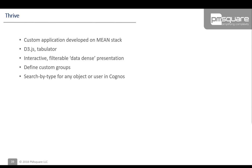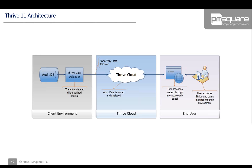Thrive allows you to define custom groups — you can group a set of users together, say 'this is our marketing department,' and see what their usage patterns look like. You can also search for objects in Cognos like a user, report, or package to find what you're looking for easily. On the back end, the Cognos audit database feeds a Thrive data uploader that extracts data into the Thrive cloud where it's stored and analyzed, and then users can go through an interactive web portal to explore that information and derive insights.